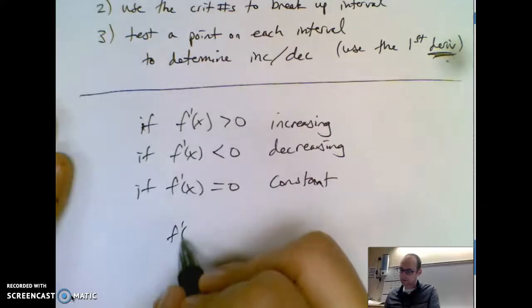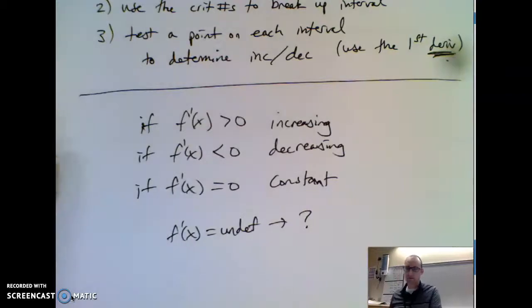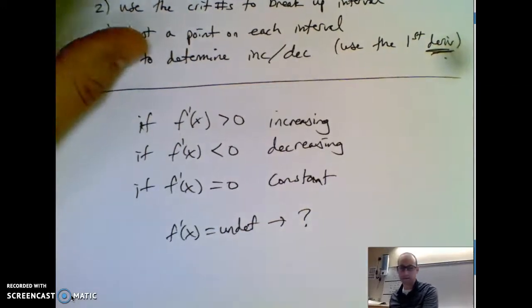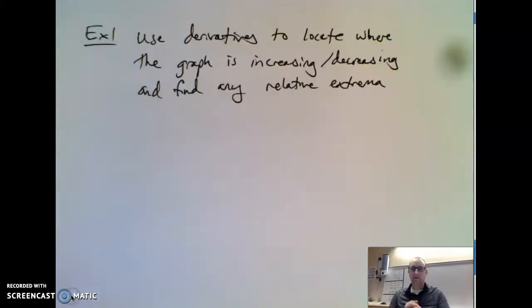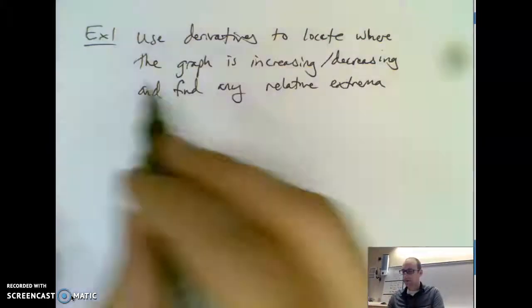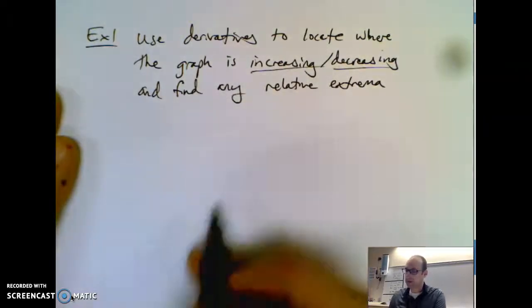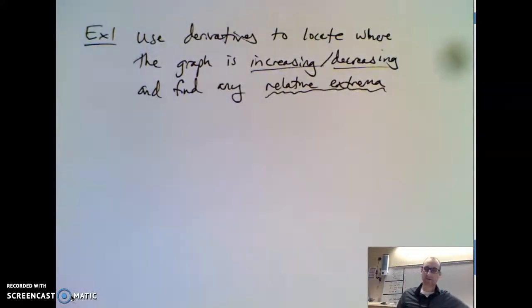If f'(x) is greater than zero you have increasing, because it means a positive slope. If f'(x) is less than zero you have a decreasing part of your function. If f'(x) equals zero it's constant. If f'(x) is undefined, we don't know if it's increasing, decreasing, or constant — it's probably an inflection point, but we'll find out what that means later. Let's do an example.